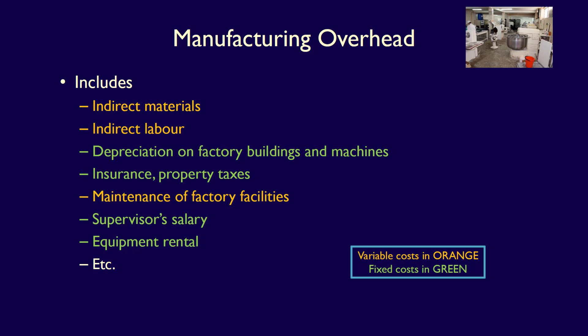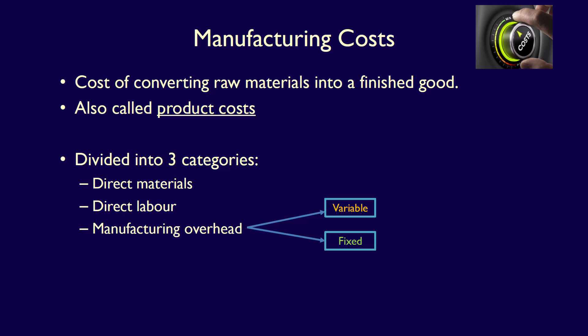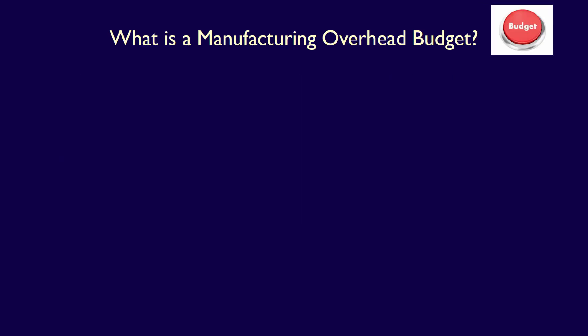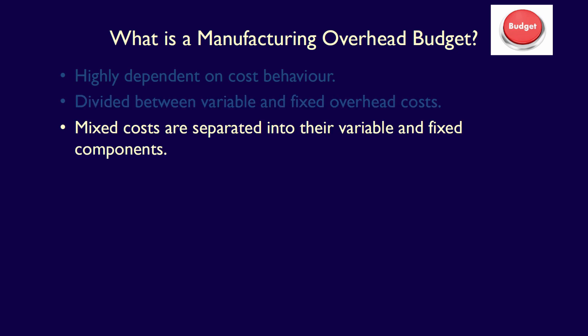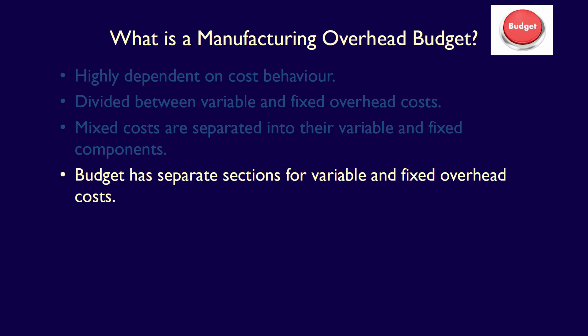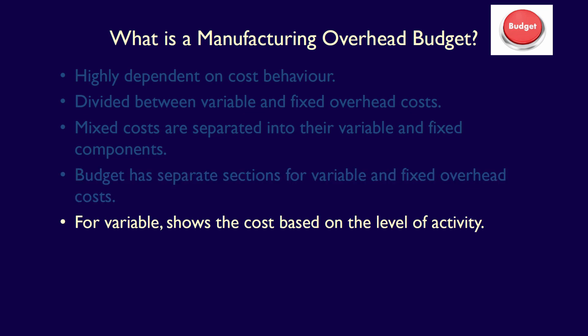At least within the relevant range. Manufacturing overhead is made up of both variable and fixed costs. When we are costing products, we include direct materials, direct labour, and both variable and fixed manufacturing overhead. The manufacturing overhead budget is dependent on cost behaviour, in that overhead costs are divided between variable and fixed. If there are mixed manufacturing overhead costs, such as utilities and indirect labour, they are divided into their variable and fixed components using a cost behaviour estimation method, such as high-low or regression analysis. The manufacturing overhead budget is separated into sections – one for variable and one for fixed – allowing management to easily see which costs will change with a change in activity level. Variable costs are shown based on the level of activity, which might be machine hours, direct labour hours, or units produced.